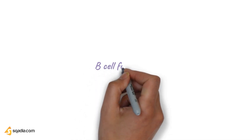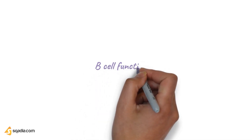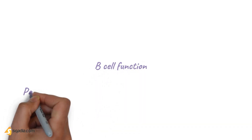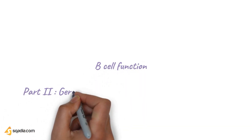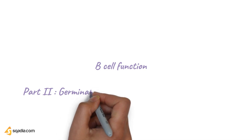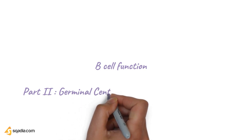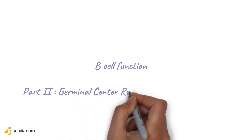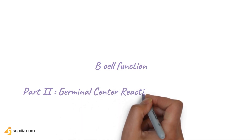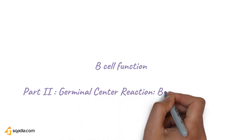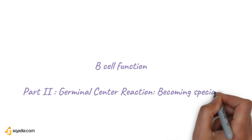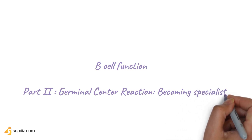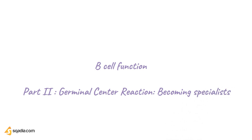Hello again, this is the second part of the video for the function of B cells. In this part, we're going to see the germinal center reaction — the process that makes B cells become specialists in producing specific antibodies.